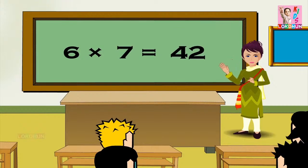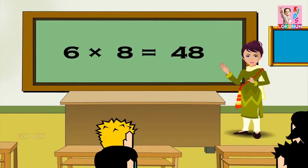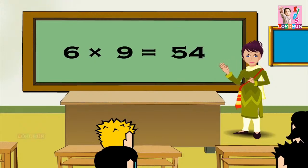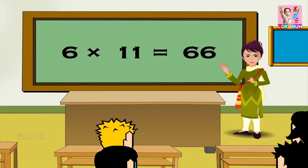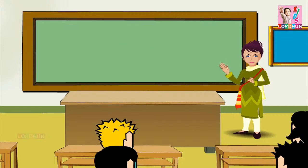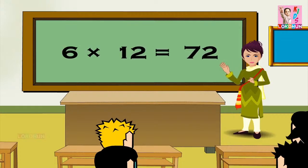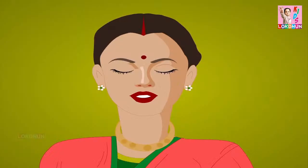6 7s are 42, 6 8s are 48, 6 9s are 54, 6 10s are 60, 6 11s are 66, and 6 12s are 72. Children, take over.